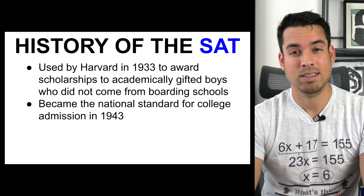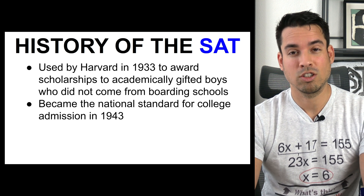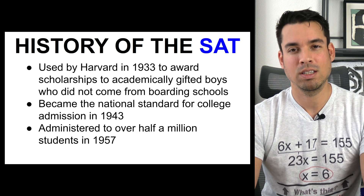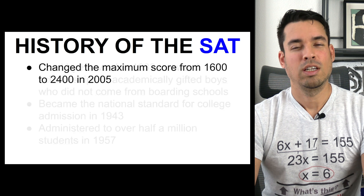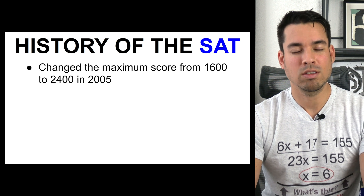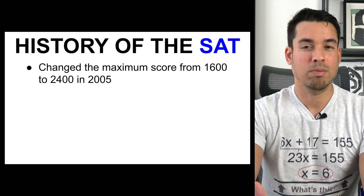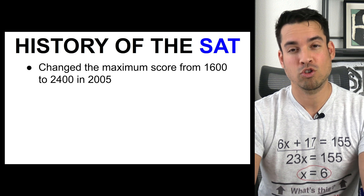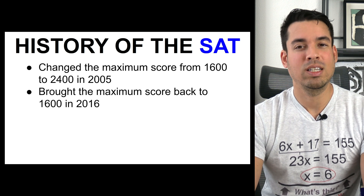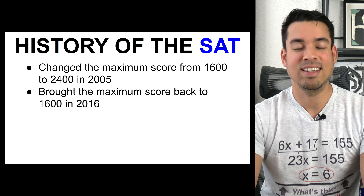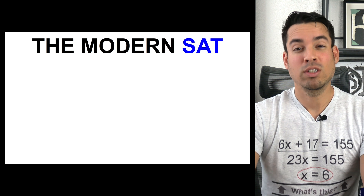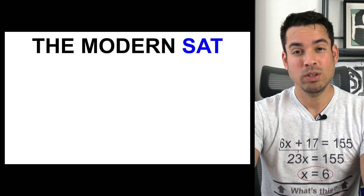It wasn't until 1943 that the SAT became the standard for college admissions. By 1957 it was administered to over half a million students. In 2005, the scoring system was changed from a 1600 max to a 2400 max, and finally the test was redesigned once again in 2016 to go back to a 1600.